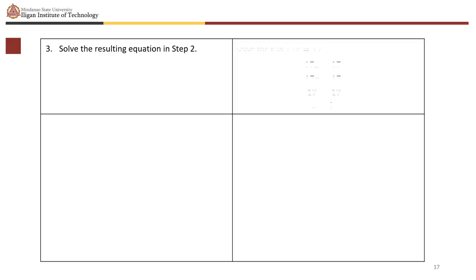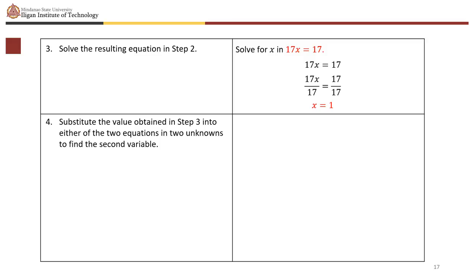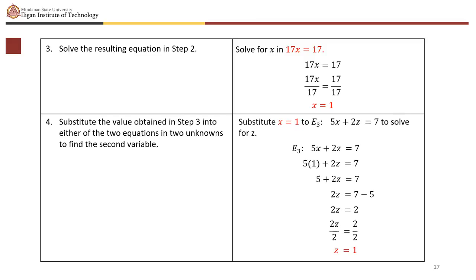Substitute x equals 1 into e sub 3 (5x plus 2z equals 7) to solve for z. We get 5 times 1 plus 2z equals 7, giving 5 plus 2z equals 7. Solving, we obtain z equals 1.